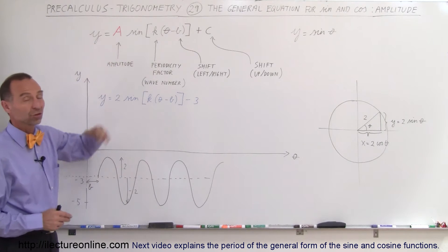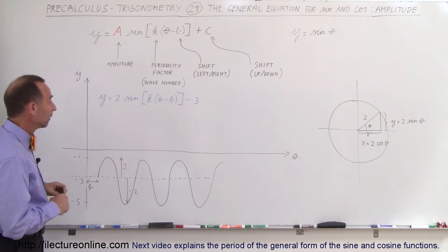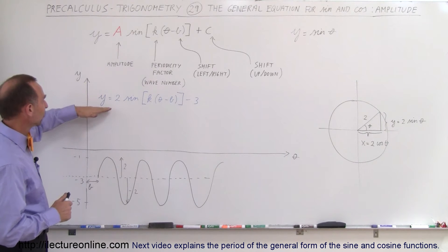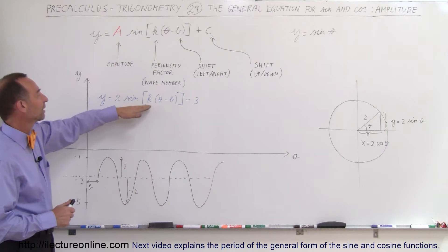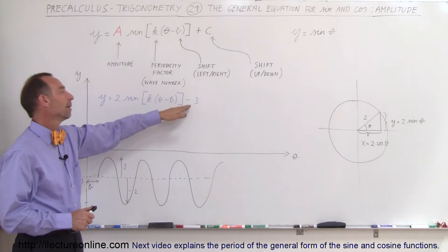Even though I wrote sine, this works just as well for the cosine function. So here we have, let's say we have the function y equals 2 sine of k times theta minus b minus 3.